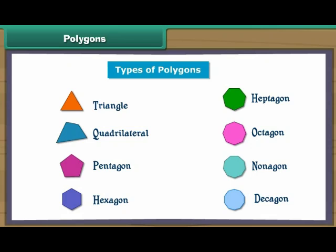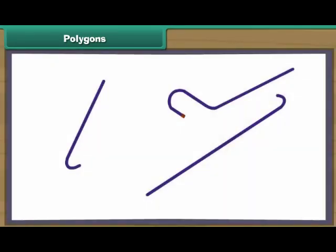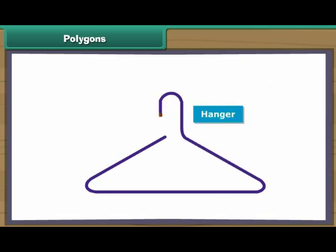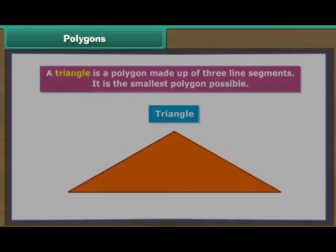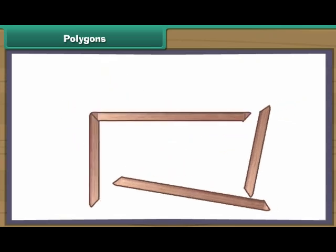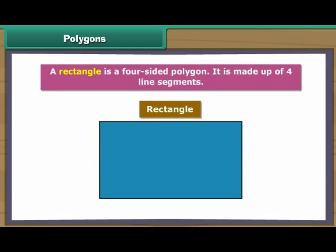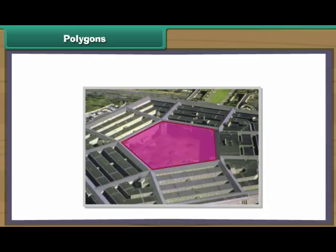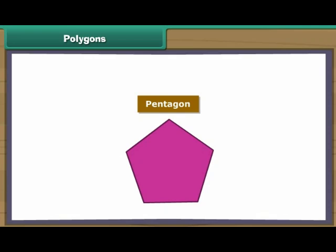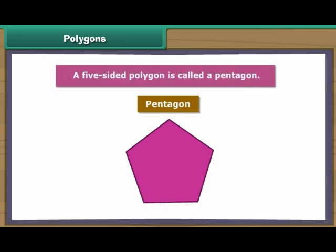Now we will learn about each polygon one by one in detail. We take three pieces of plastic and join them to form a towel hanger — we have created a triangle. A triangle is a polygon made up of three line segments; it is the smallest polygon possible. We use four pieces of carved wood to create a rectangular photo frame. A rectangle is a four-sided polygon made up of four line segments. The US Army Headquarters is known as the Pentagon as it has five sides — a five-sided polygon is called a pentagon.